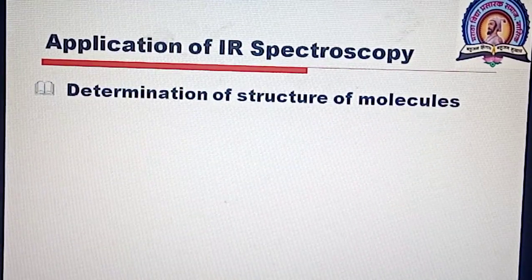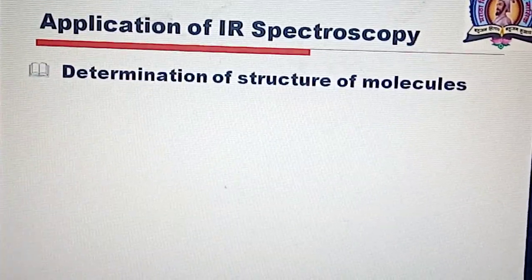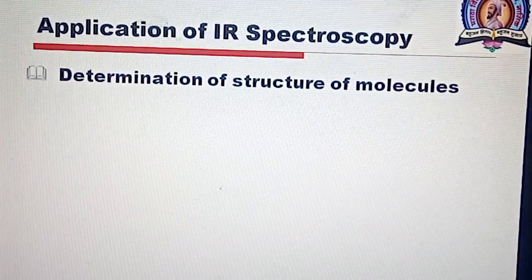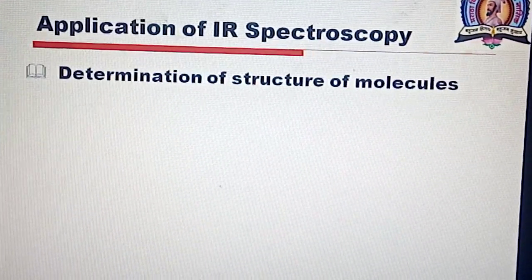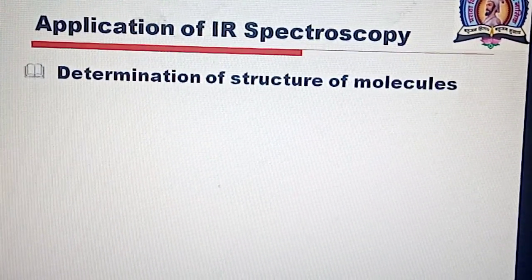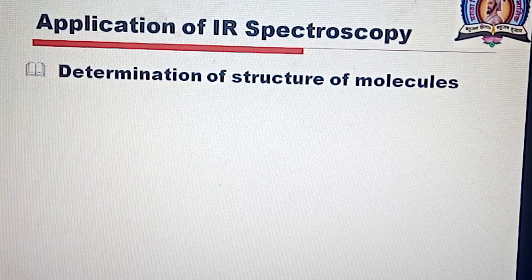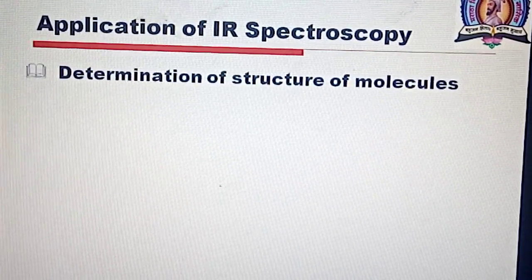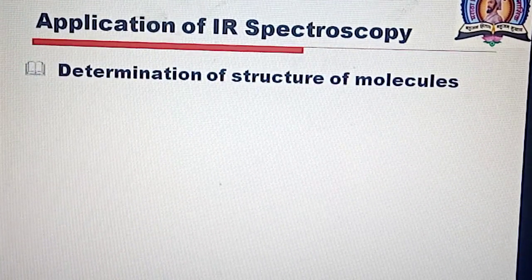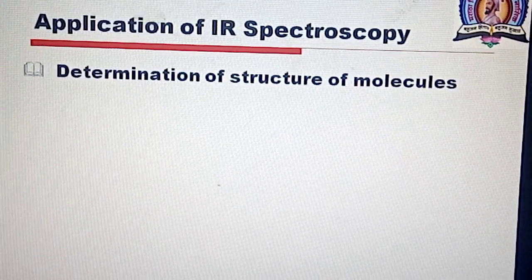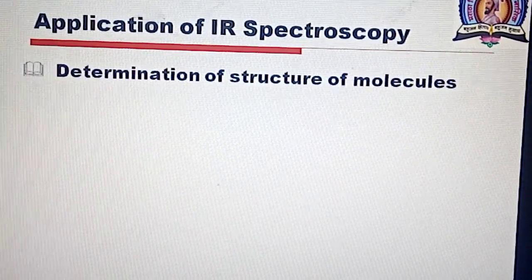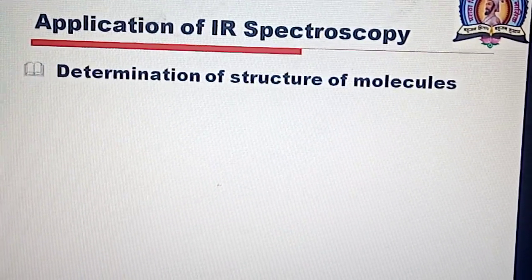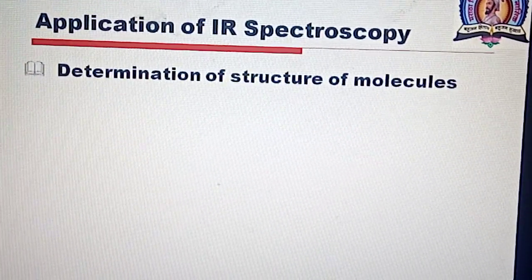In IR spectroscopy, there are three different regions present: the functional group region, the fingerprint region, and the aromatic region. The functional group region provides information about which functional groups are present in the molecule.